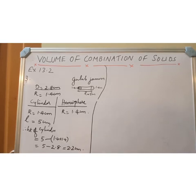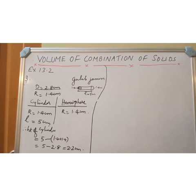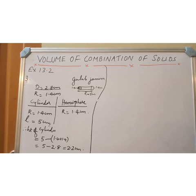Next, what we have to do is first find out the volume of 1 Gulab Jamun. There are 45 Gulab Jamuns, so after getting the volume of 1, we multiply by 45 to get the volume of 45 Gulab Jamuns. The volume of sugar syrup is equal to 30% of the volume of 45 Gulab Jamuns — that is given in the question.